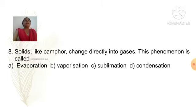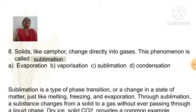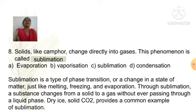Solids like camphor change directly into gases. This phenomenon is called: Option A evaporation, Option B vaporization, Option C sublimation, Option D condensation. Answer is Option C sublimation. Sublimation is a type of phase transition or a change in the state of matter just like melting, freezing and evaporation. Through sublimation a substance changes from a solid to gas without ever passing through a liquid phase. Dry ice, solid carbon dioxide, provides a common example of sublimation.